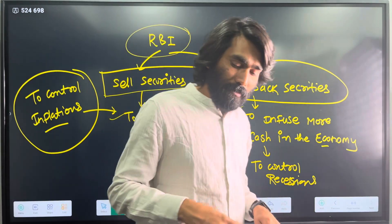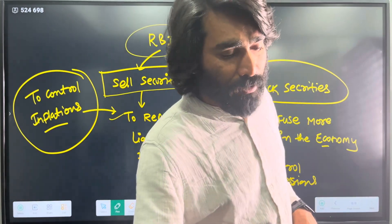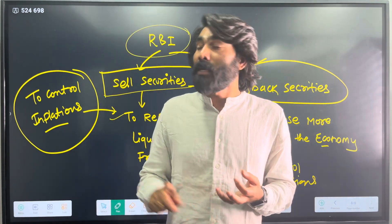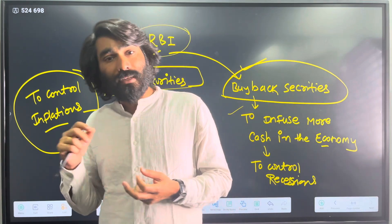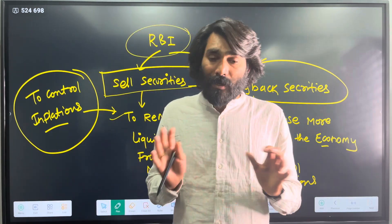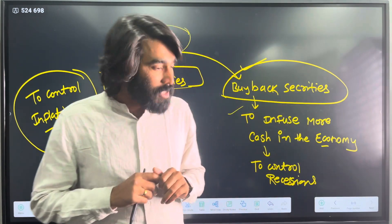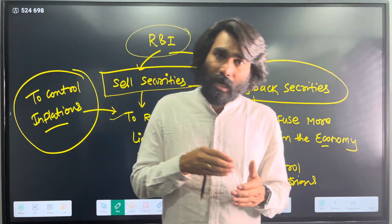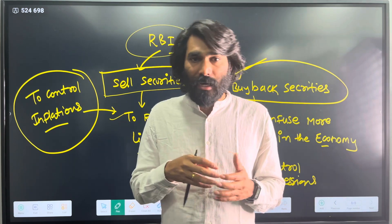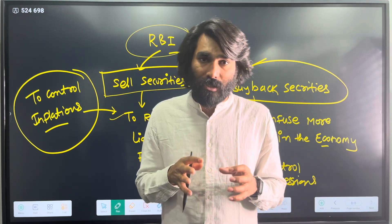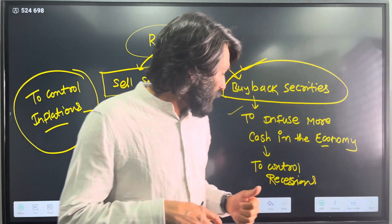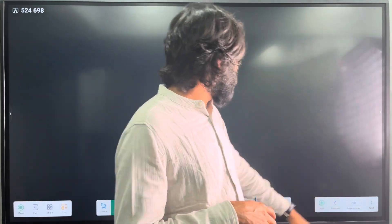From an exam perspective, the key takeaways are: the types of T-bills (91, 182, and 364 days), how T-bills work, and how to calculate yield. That concludes the T-bills session. If you have any questions, post them in the comments and my team or I will address them. You can also provide feedback.